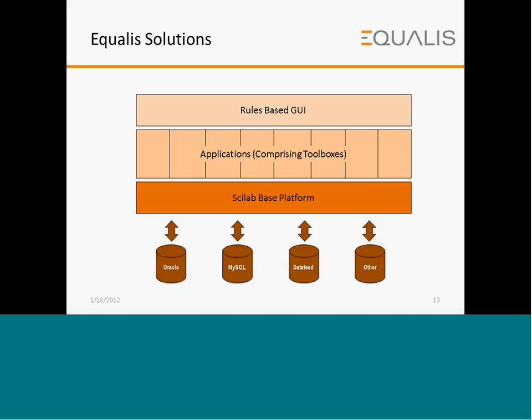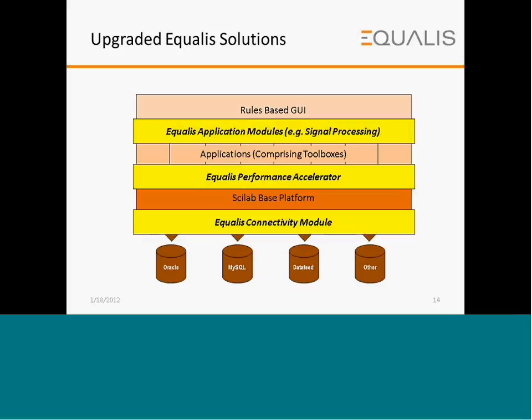The Equalist solution is built on a SciLab-based platform that can interact with databases such as Oracle and MySQL. Applications comprise toolboxes, and users have a rules-based GUI. There are three upgraded Equalist solution layers: the connectivity module enhances database and SciLab platform interaction, the performance accelerator enhances applications and the SciLab platform, and the application module enhances applications and the GUI.